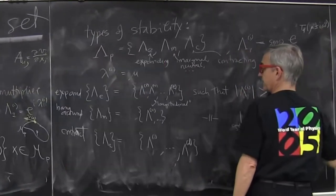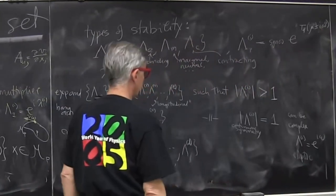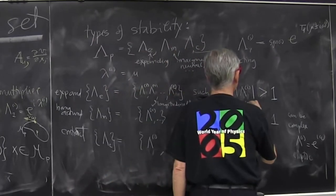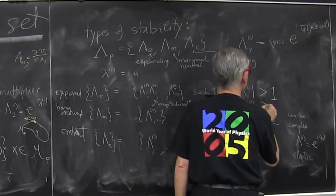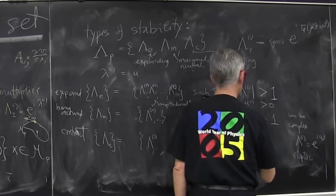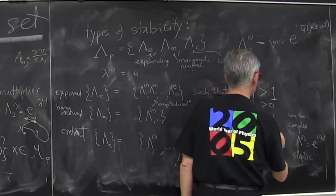Now, if you like the exponents, then this classification is that the expanding ones have mu_i positive.